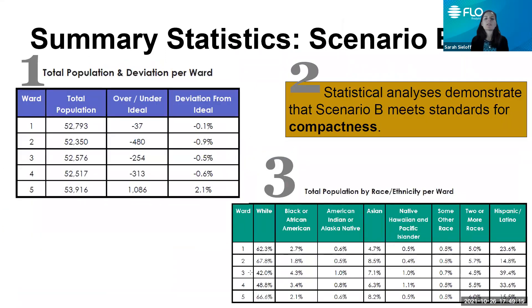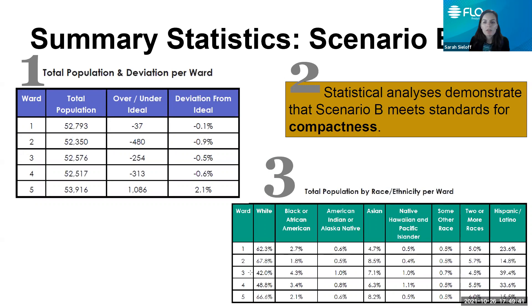The summary statistics for Scenario B show a total population deviation of three percent. Everything is under five percent and queuing fairly close to the ideal population. Ward 5 has the biggest deviation at 2.1 percent but is still well under the five percent threshold designated by the City of Reno charter. Statistical analysis confirms Scenario B meets standards for compactness, and population by race and ethnicity per ward shows some shifts but not a large number of changes.